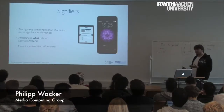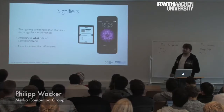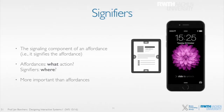Something else that Norman introduced with the newest revision of his book is signifiers. Very often designers misused the affordance keyword to describe where something should happen, not what something should do. So Norman introduced signifiers that tell you where to interact in the way that the affordance tells you to do.